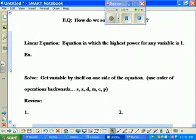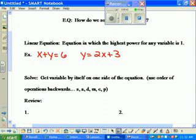A linear equation is an equation in which the highest power for any variable is 1. Write this down. An example would be x plus y equals 6, that's linear, or y equals 2x plus 3, that's linear.